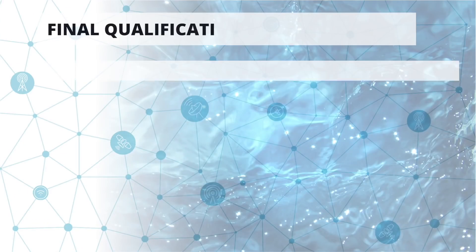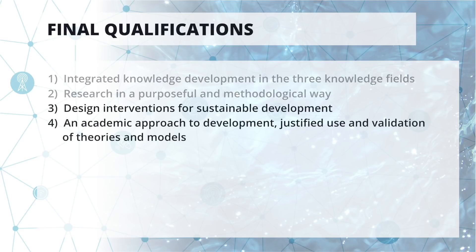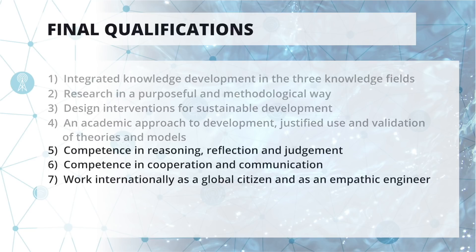At the end of these two years you will have acquired master's level in seven final qualifications. The first two deal with science and academic skills. Numbers three and four are about creativity and being able to design scenarios. The final three are about your personal competences: how you think and reason as a scientist, how you see yourself, communication and project skills, and playing an international role — being sensitive to cultural environments and being, in short, an empathic engineer.